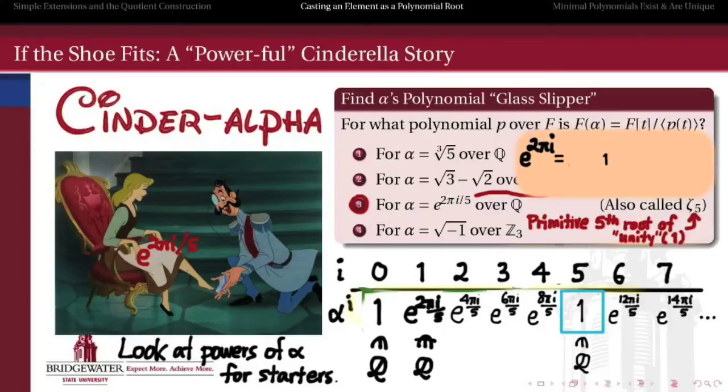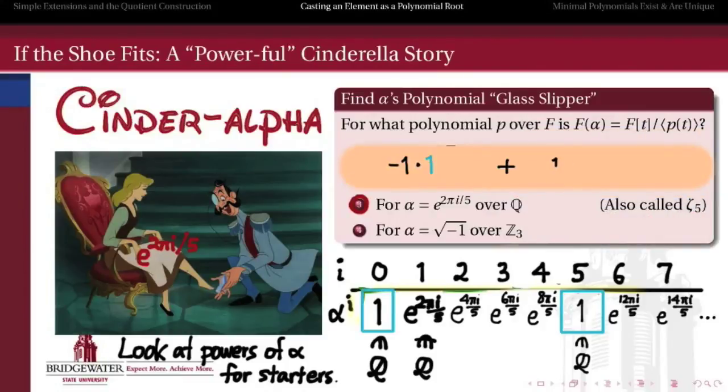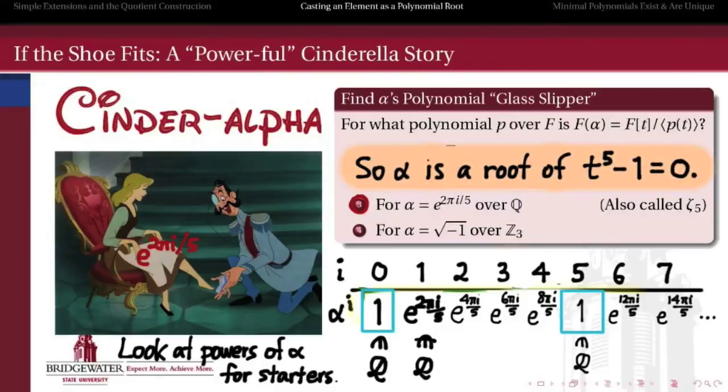And so it should be pretty obvious what to do from here. We need to find a rational combination of these powers of alpha that gives us 0. And the easiest way to do it is to take negative 1 of the zeroth power and 1 of the fifth power and add them together. So this number alpha, that we call a primitive fifth root of unity, satisfies the polynomial equation negative 1 plus alpha to the fifth is equal to 0. And therefore it is the root of t to the fifth minus 1. Is it irreducible? Maybe. We don't know. Right now we don't care, it's just some polynomial of which this alpha is a root.